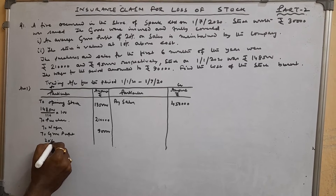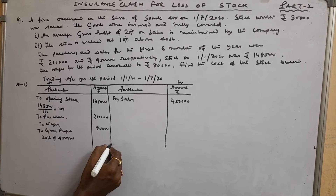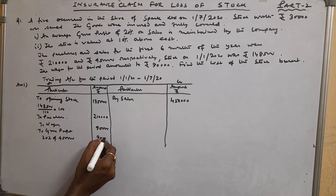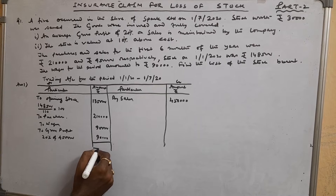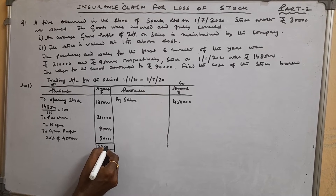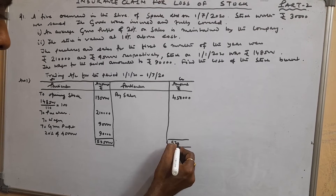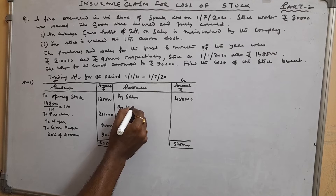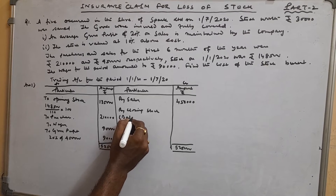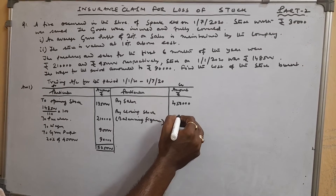Gross profit on sales: 20% on Rs. 4,50,000 equals Rs. 90,000. Total coming to Rs. 5,25,000. By closing stock — balancing figure — Rs. 75,000.